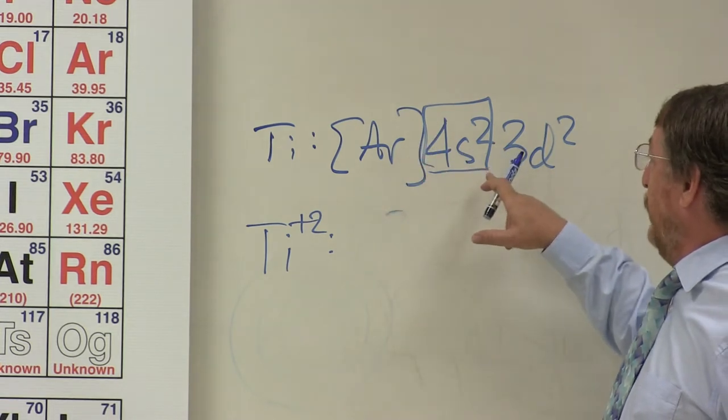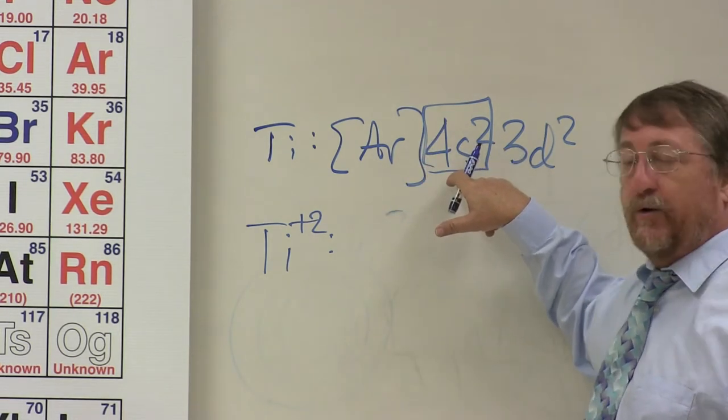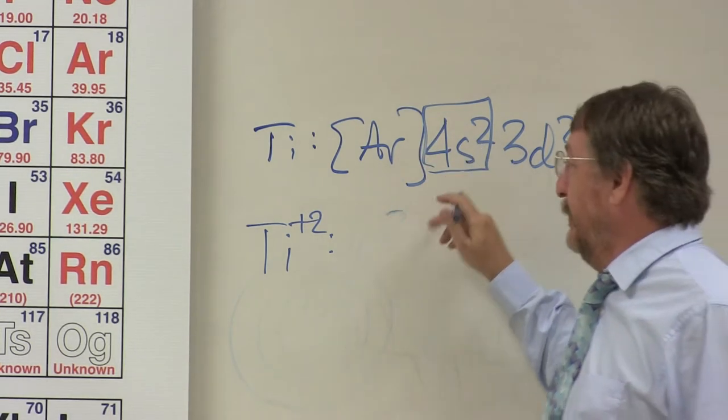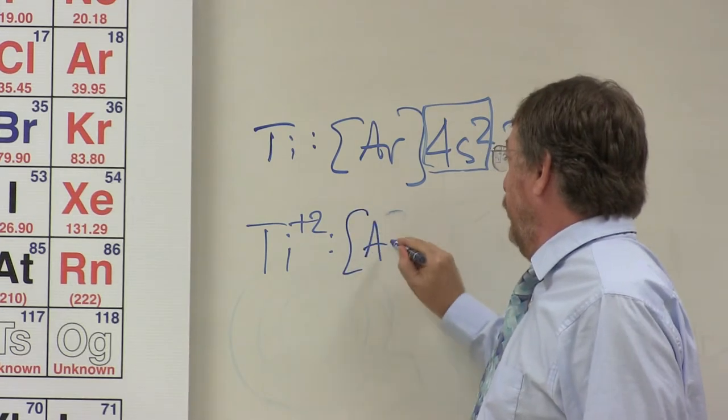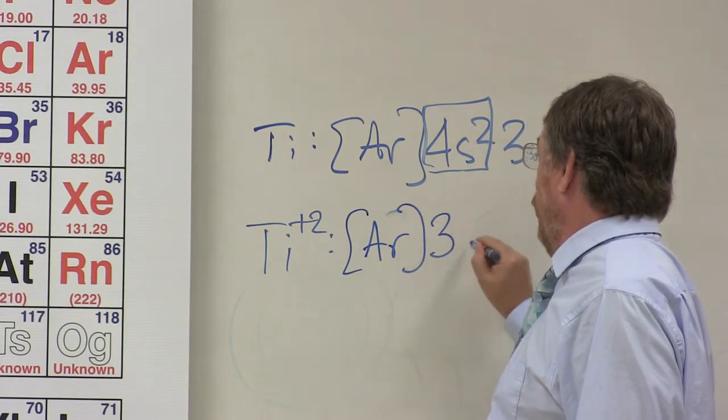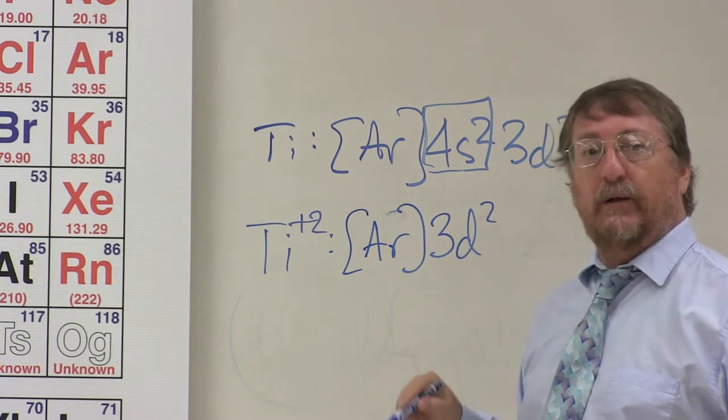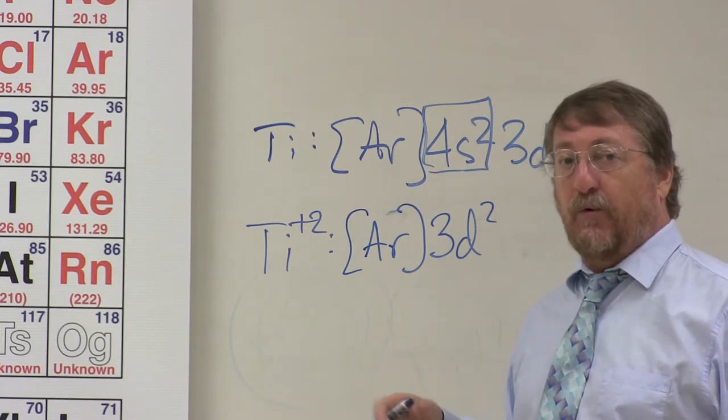So as I go through and say, okay, titanium likes to form titanium plus two. Well, when I look at this, I say, okay, titanium plus two, the outermost electrons are the 4s2. So titanium plus two is argon, 3d2. It lost the 4s electrons before the 3d.